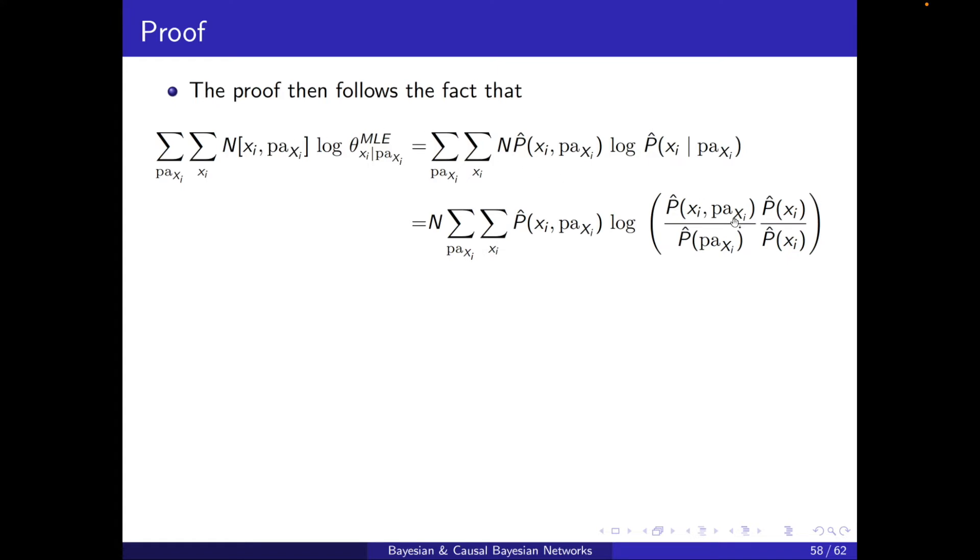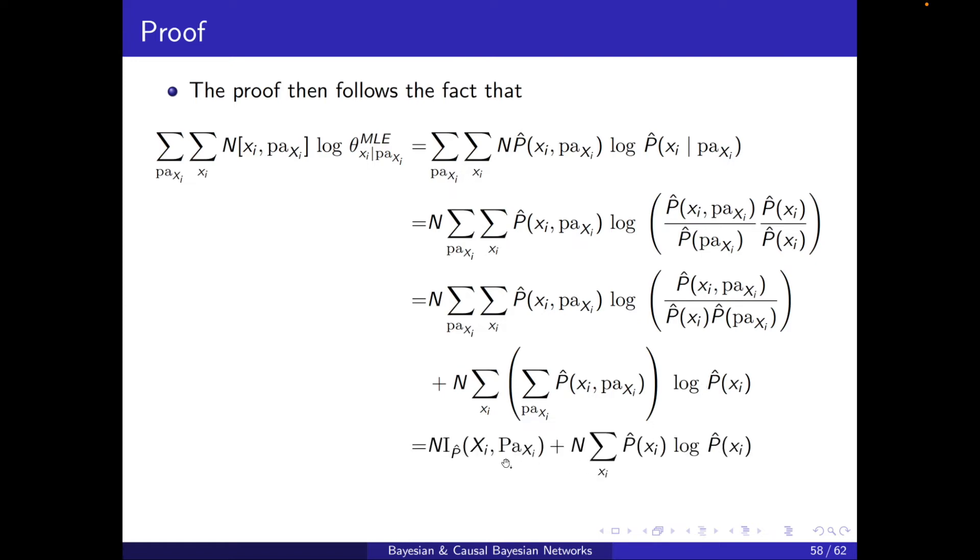and I will take p hat of Xi in the denominator here, and the other one I will just take it out and get this other term. The first term is the mutual information. The second term is n, so I'm marginalizing over parents of Xi, so what will remain is just p hat of Xi, and you can see that this second term is just the negative of the entropy of Xi.